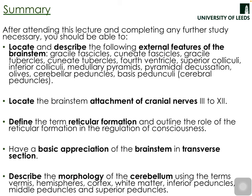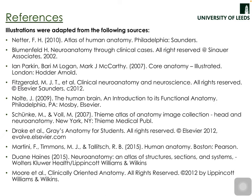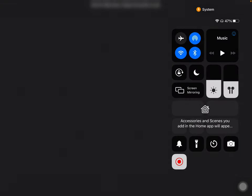That concludes the discussion of the brainstem and cerebellum. After this lecture you should be able to locate and describe the external features of the brainstem, identify brainstem attachment points of cranial nerves 3 to 12, define the reticular formation and its roles, have a basic appreciation of brainstem transverse sections, and describe the morphology of the cerebellum using the key anatomical terms covered.